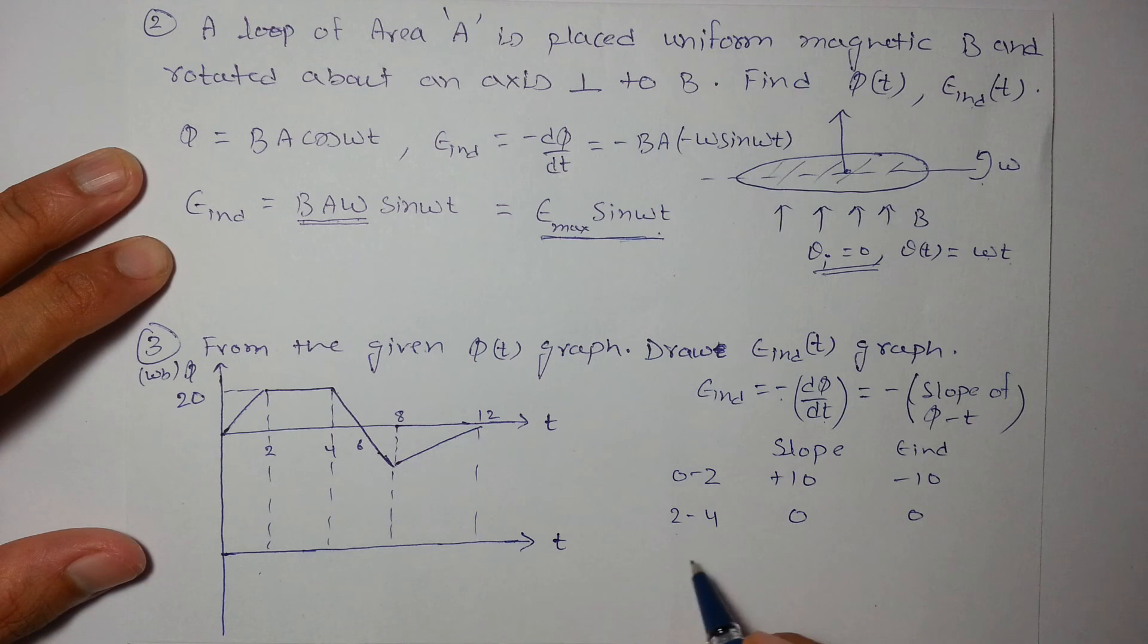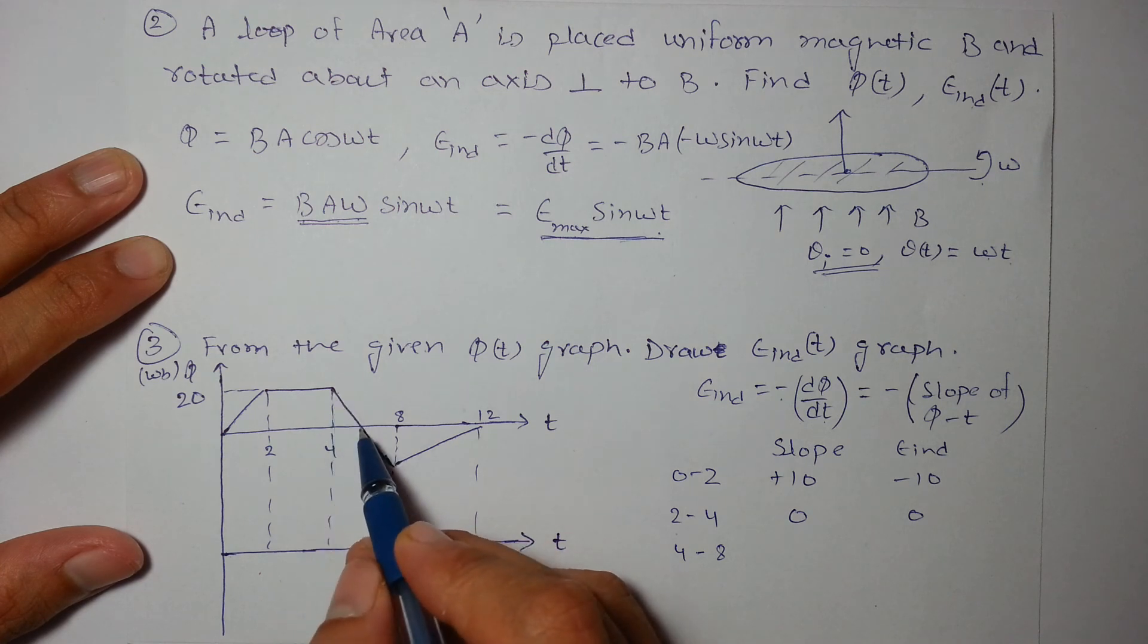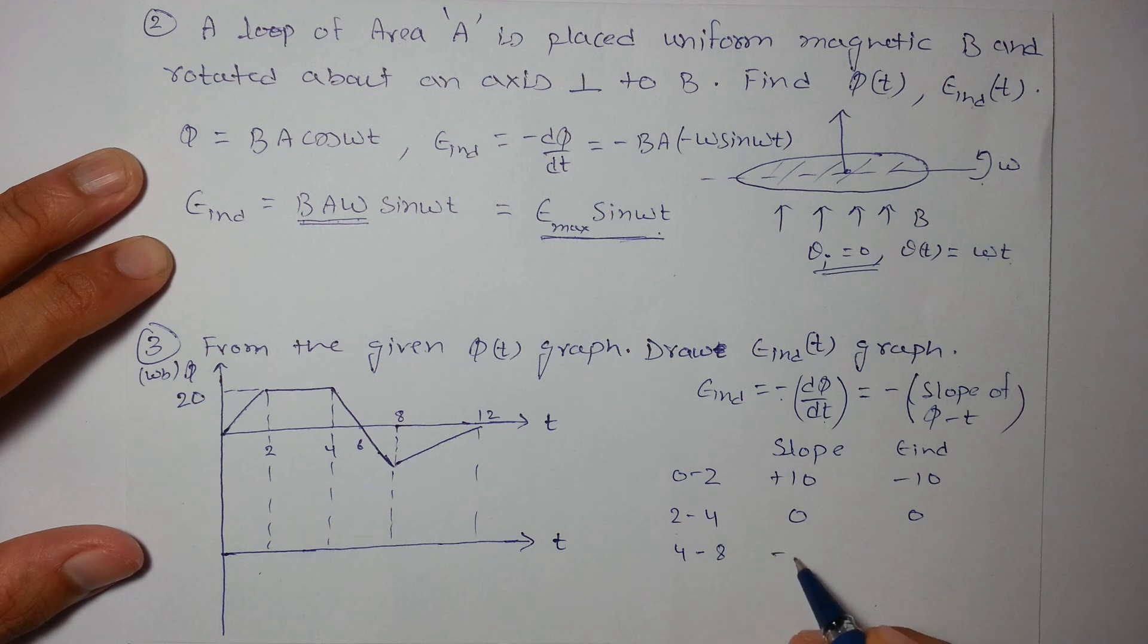From 4 to 8, the slope is, it reduces to 20, it reduces by 20 in 2 seconds. So the slope is -10.